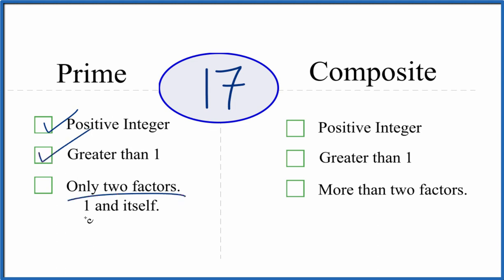And are there only two factors, 1 and 17, that divide evenly into 17? We know 1 times 17, that's 17. So there's one, two factors. But are there any other factors that go evenly into 17? Turns out that there aren't.